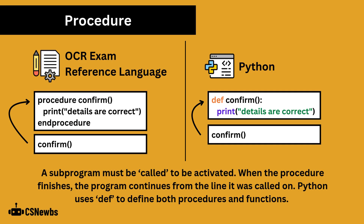A subprogram must be called to be activated. When the procedure finishes, the program continues from the line it was called on. Python uses def to define both procedures and functions.